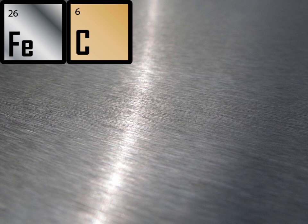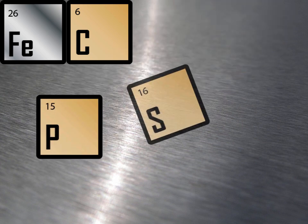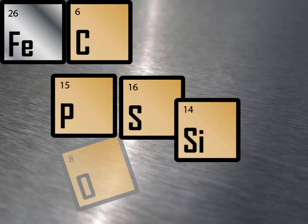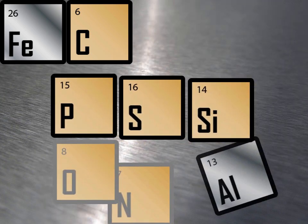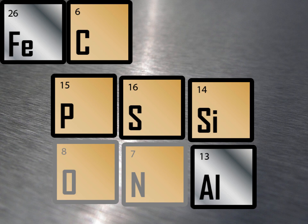Steel alloys often contain trace elements such as phosphorus, sulfur, silicon, oxygen, nitrogen, and aluminum, either from the natural state of the source iron or as an artifact of the process used to create it.